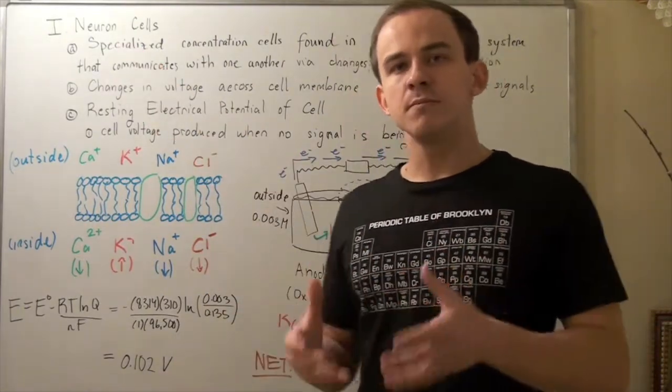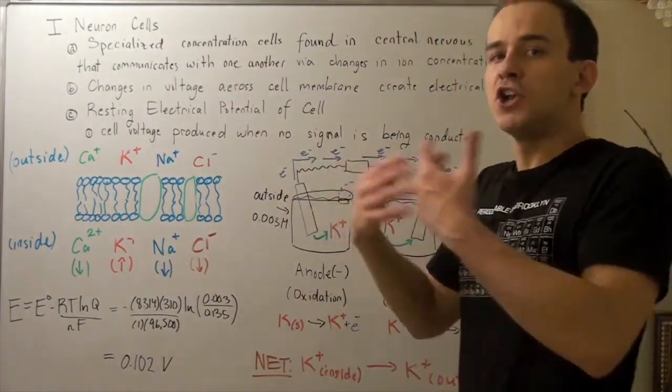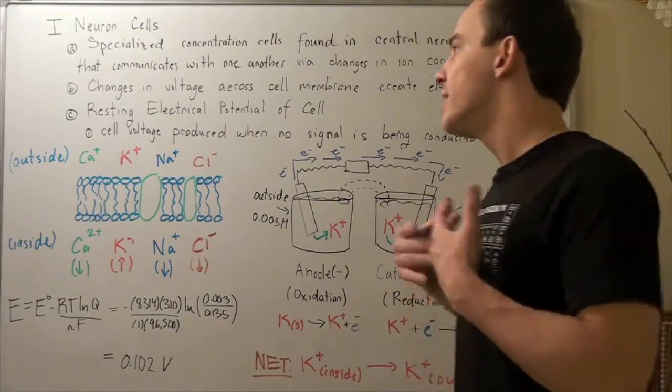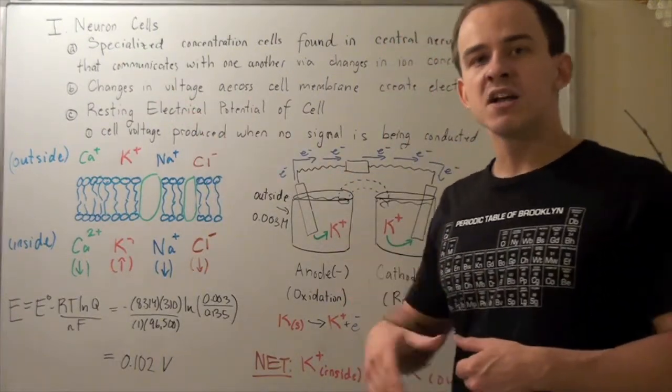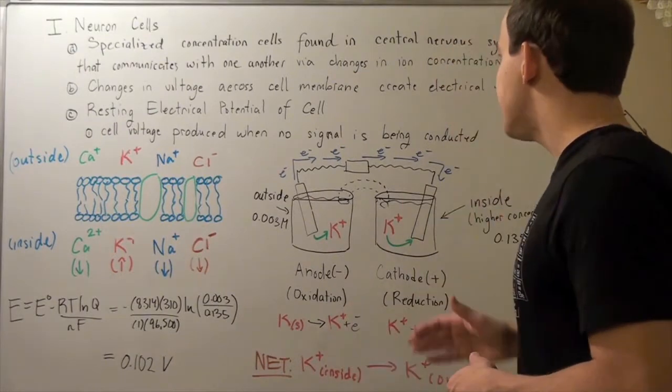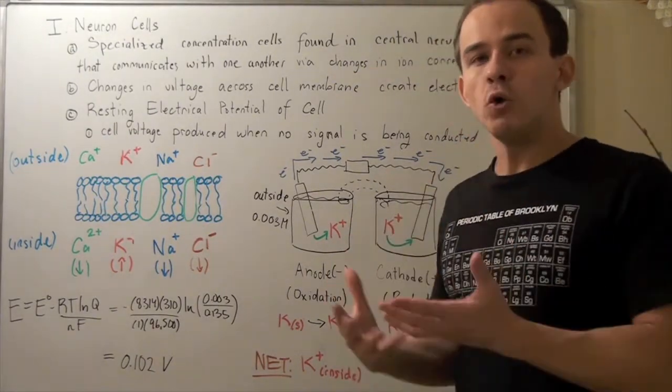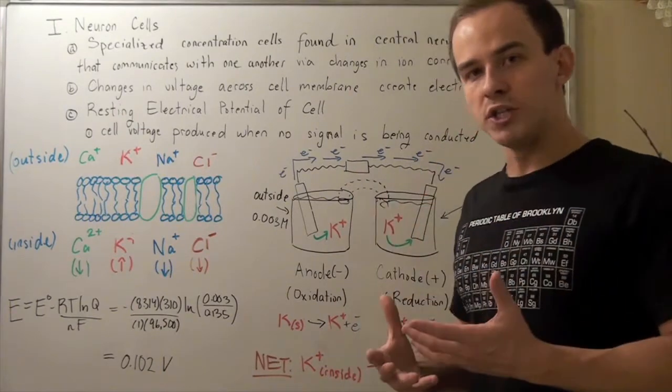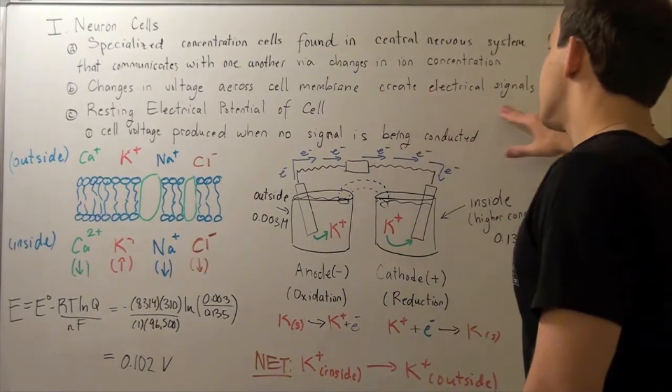Neuron cells are simply specialized concentration cells found within our nervous system that communicate with one another via changes in ion concentration. These changes in ion concentration create a difference in voltage or something called a cell voltage, and this difference in voltage creates electrical signals.